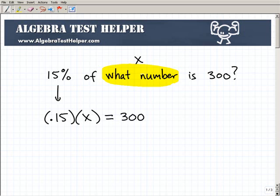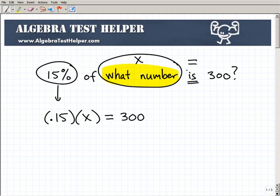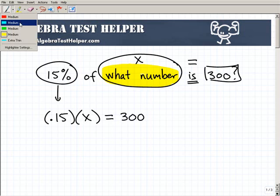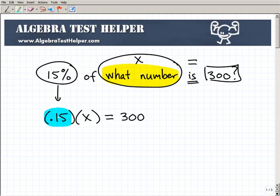But 0.15 times whatever that number is, is going to be equal to 300. Remember, in algebra, this word is, right here, is the equal sign. So 15% of this mystery number X is equal to 300. So you can see here, here's my equation, 15%, that's 15% as a decimal, of this particular number X is equal to 300.